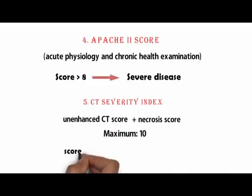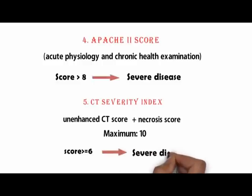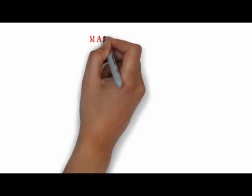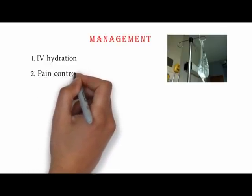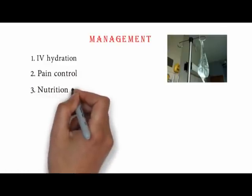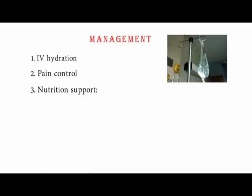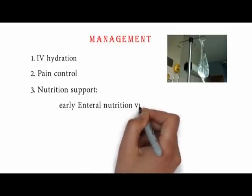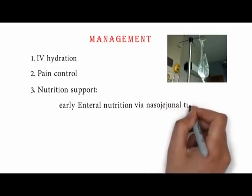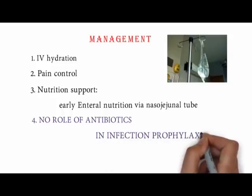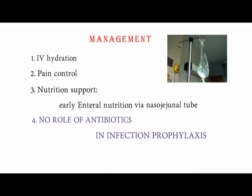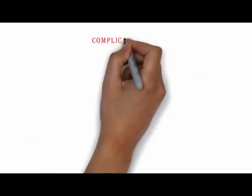Now coming on to management: first and most important is IV hydration. Second is pain control. Third is nutritional support — this has been updated to early enteral nutrition via naso-jejunal tube. Fourth, there is no role for antibiotics in infection prophylaxis; antibiotics are recommended only if there is a concern for concurrent cholangitis.